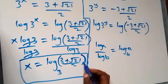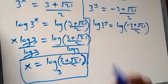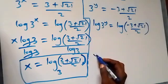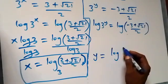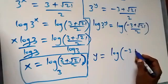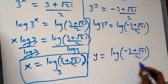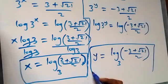Applying the same process for y, we get y equals log base 3 of (negative 3 plus root 21 over 2). So we now have the values of x and y for the first case. Moving on to the second case.